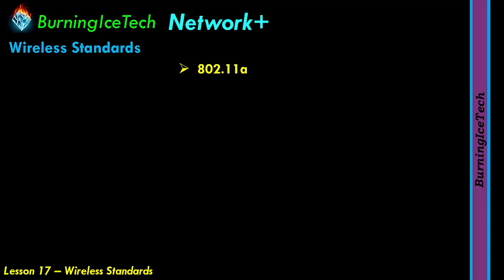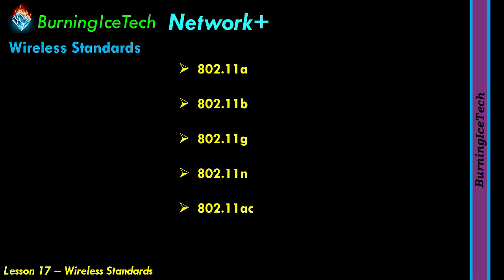So 802.11a is followed by 802.11b, 802.11g, 802.11n, 802.11ac, and then the last one is 802.11ax. That is actually a newer one that came out during COVID-19, if you believe it or not. Like I said earlier, wireless standards usually start with 802.11 and then some letter after that, as you can see with all the standards listed here.